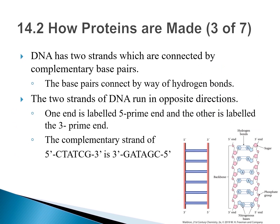DNA has two strands connected by complementary base pairs. The four bases on one strand — G, C, T, and A — connect with the four bases on the other strand by hydrogen bonds. Each time a G appears on one strand, it pairs with a C on the other strand. Each time a T appears on one strand, it pairs with an A on the other strand.